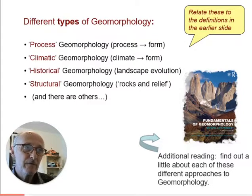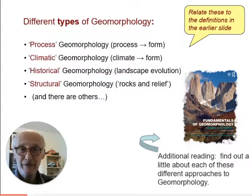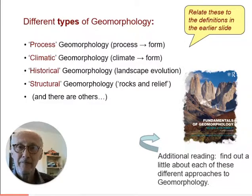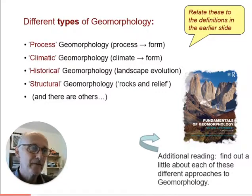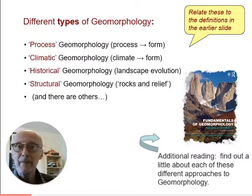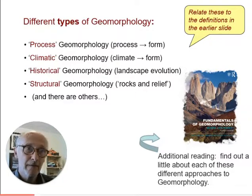At various points in the past, people have thought about geomorphology differently. My predecessor at Keele wrote a book called Climatic Geomorphology — the idea that climate controls the landforms in an area. We'd say there's an element of that, because climate controls process and process controls landform, but we've moved away from that direct climate–form link. Other people approach geomorphology from a historical perspective, thinking about how landscapes evolve over time.